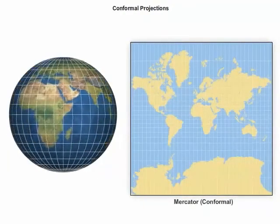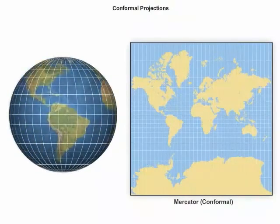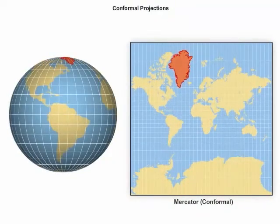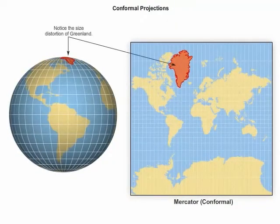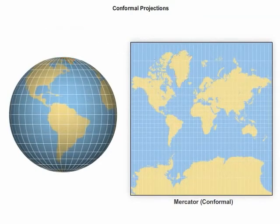Conformal map projections preserve shape or angular relations on the map. In doing so, they necessarily distort area or size. Conformal maps are often used for mapping land parcels, navigation charts, and topographic maps.